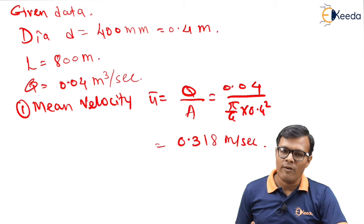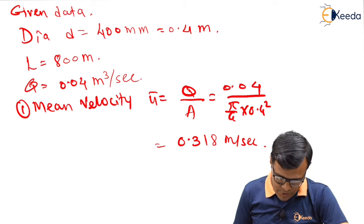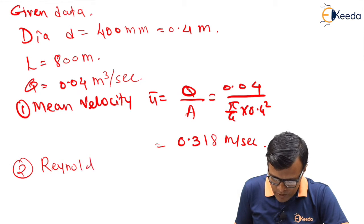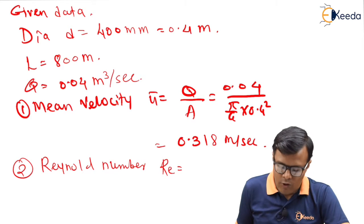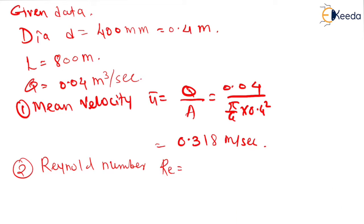The purpose to calculate mean velocity is to find the flow type, that is whether it is turbulent or laminar. Second is to find Reynolds number Re. Already we know the value of kinematic viscosity, so we will use the corresponding formula, that is Re equal to VD upon ν. So 0.318 × 0.4 upon ν value is given to us as 0.018.